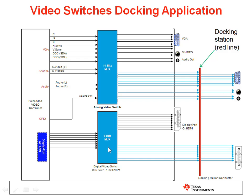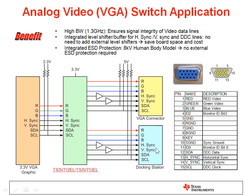Digital video signals are also muxed via a digital switch to a display port or a docking station connector. Analog video signals require analog switches like the TS-3V712 or the TS-3V713 to properly route these signals to a VGA connector in the laptop or to a docking station. The high bandwidth of approximately 1.3 GHz of these analog video switches ensures signal integrity of video data lines. These switches have an integrated level shifter and buffer, so no external ones are required. Likewise, these switches also have integrated ESD protection, so no external ESD protection is required.